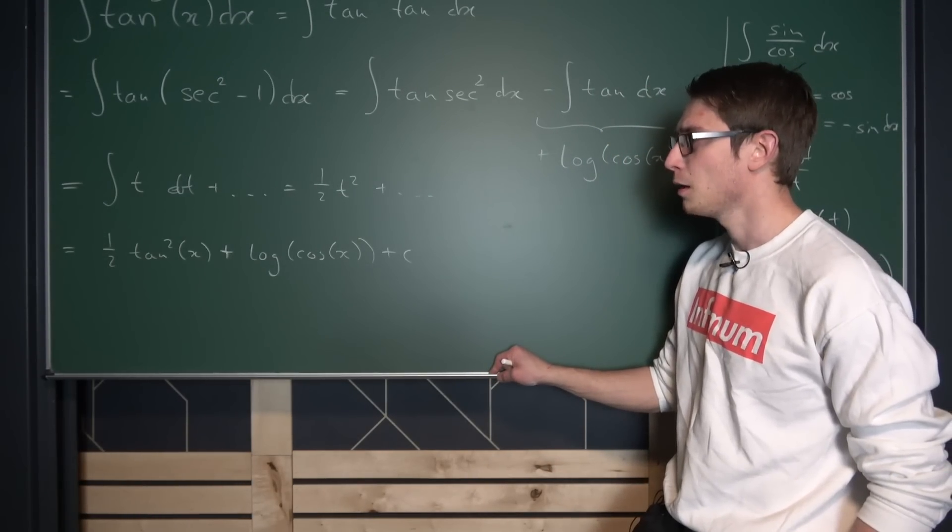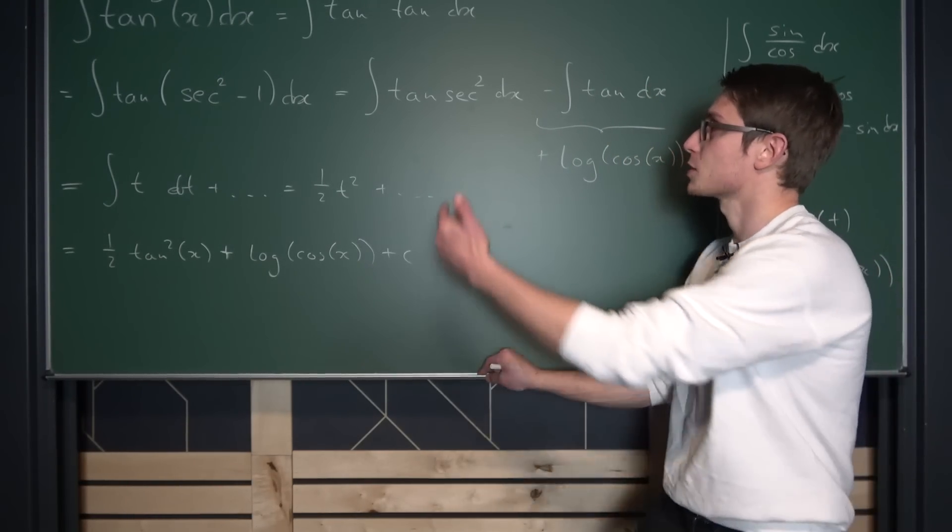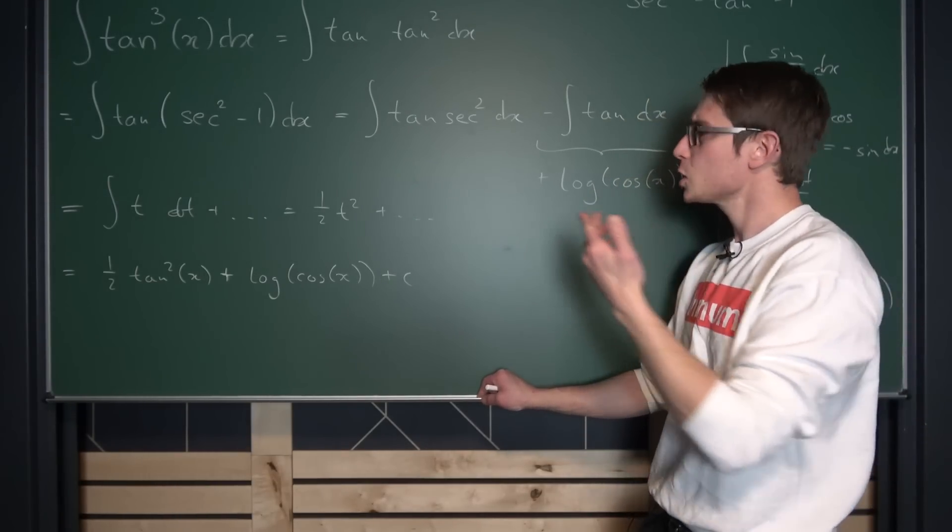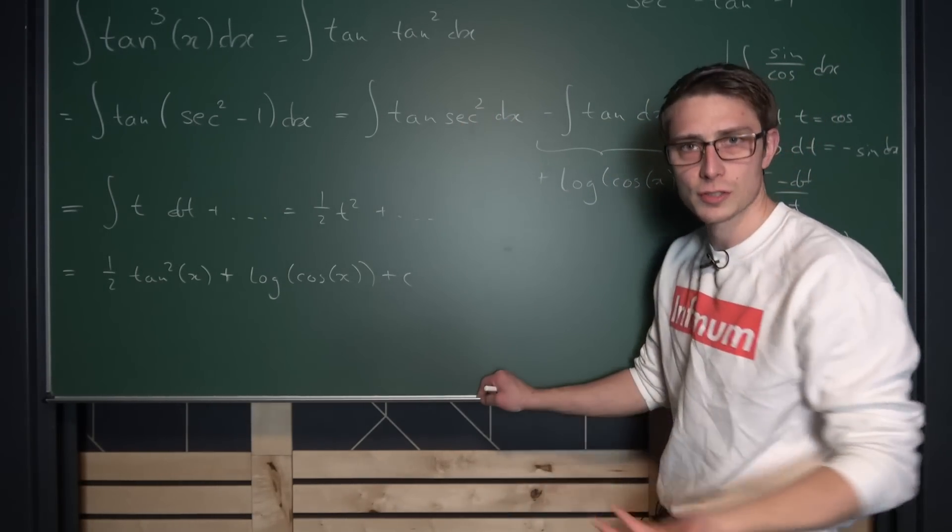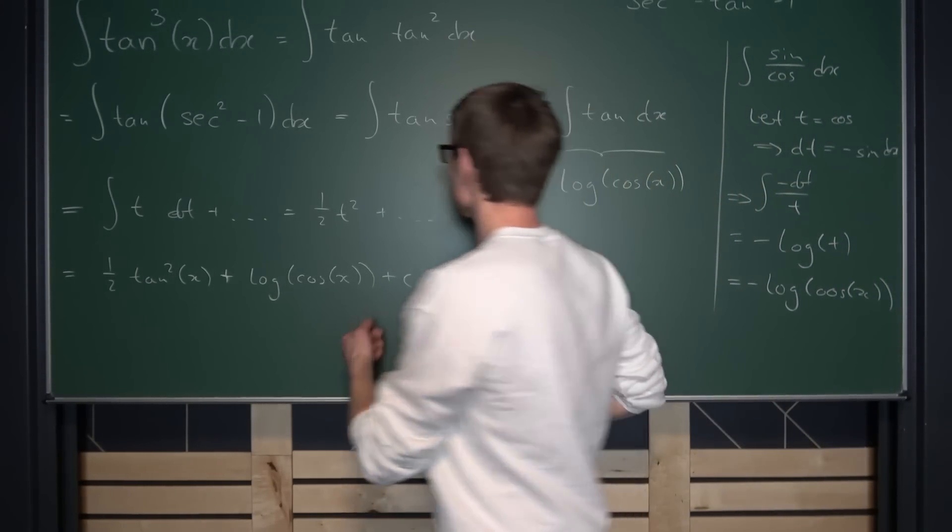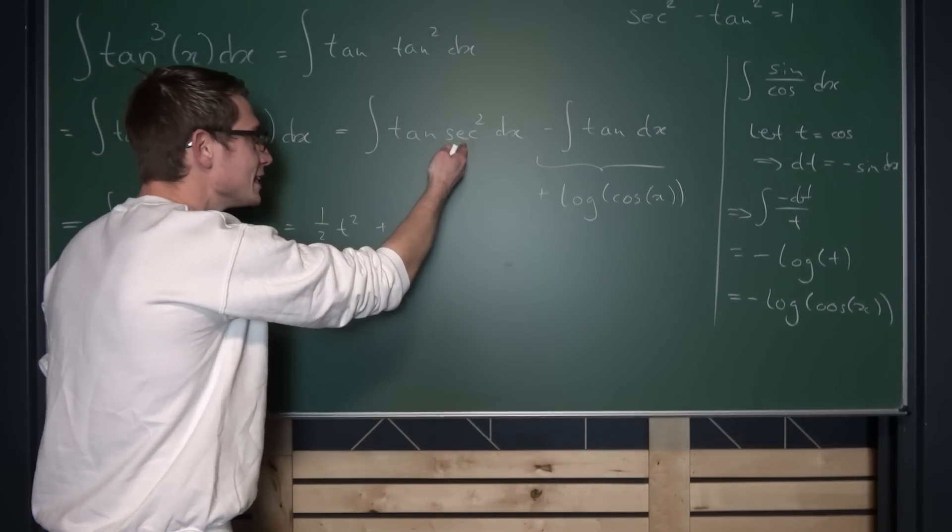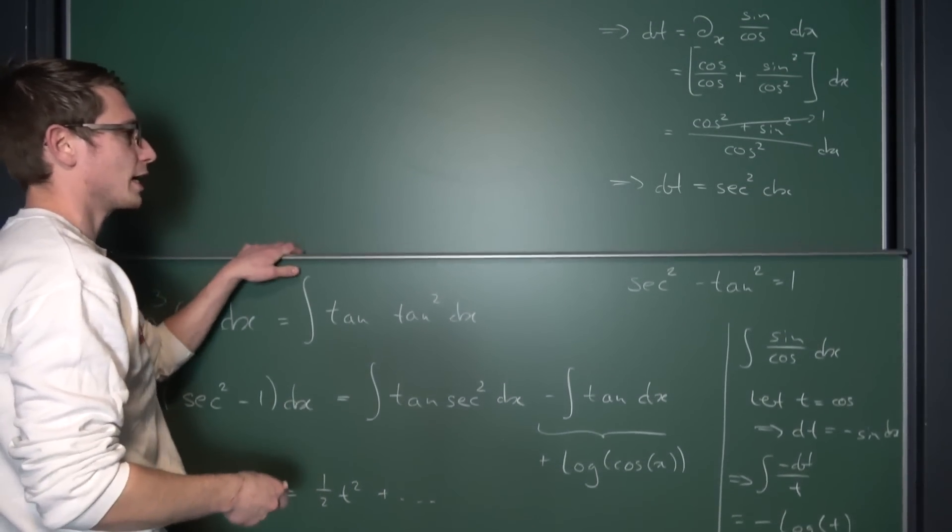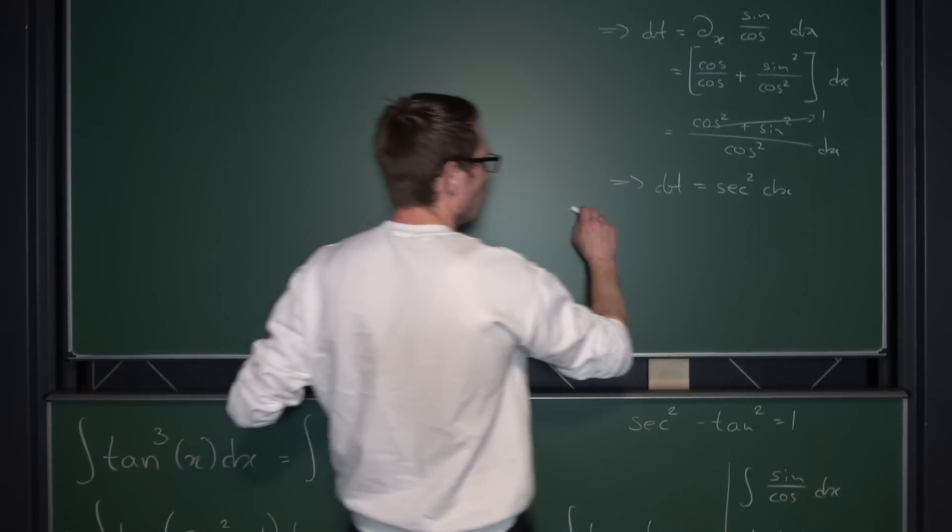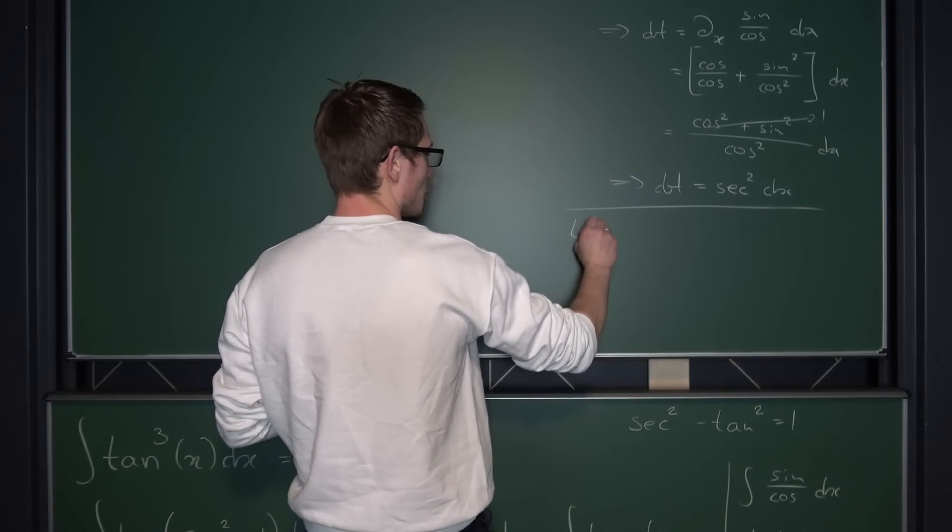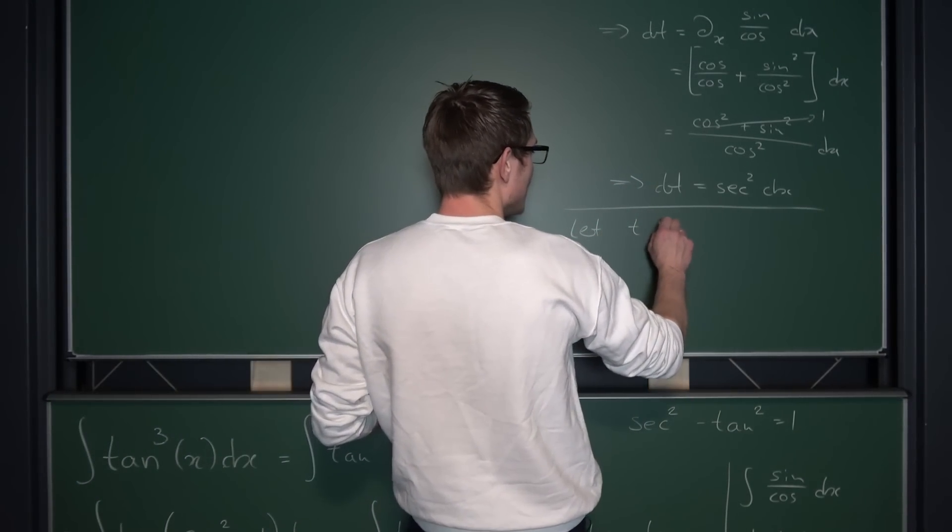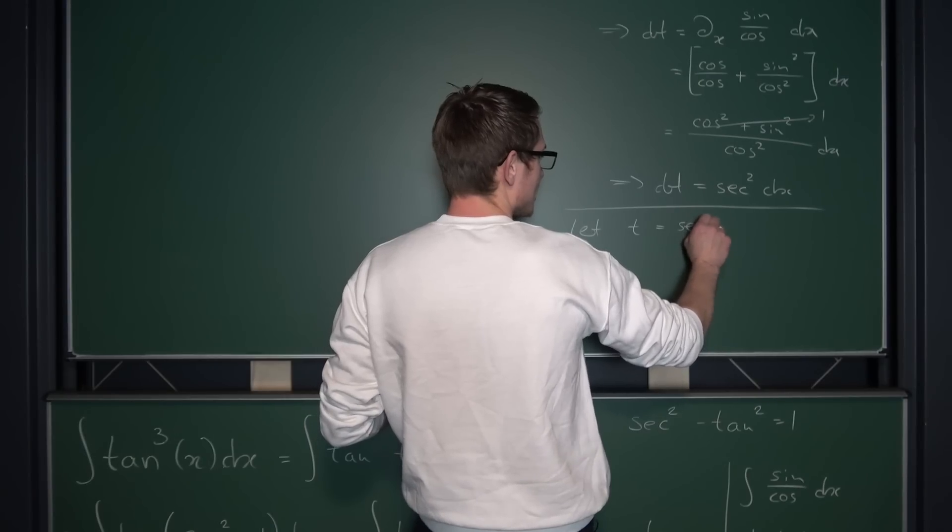Hmm. But this is just one way of substituting in here. What you could also do instead of substituting the tangent inside of this integral, is we could substitute the secant, for example. So what would happen if we set t instead of tangent of x to be equal to secant? Okay, let us do this really quick.